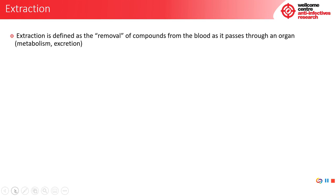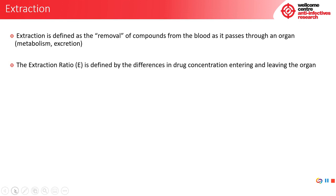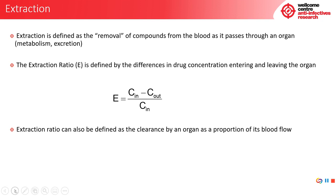Extraction is defined as the removal of compounds from the blood as it passes through an organ, either by metabolism or by excretion. The extraction ratio is defined by the difference in drug concentration entering and leaving the organ — equationally, extraction is the difference of concentration-in minus concentration-out divided by concentration-in. This can be expressed as a fraction (less than 1) or as a percentage (up to 100%). Extraction ratio can also be defined as the clearance by an organ as a proportion of its blood flow, written as clearance by the organ divided by blood flow to that organ.